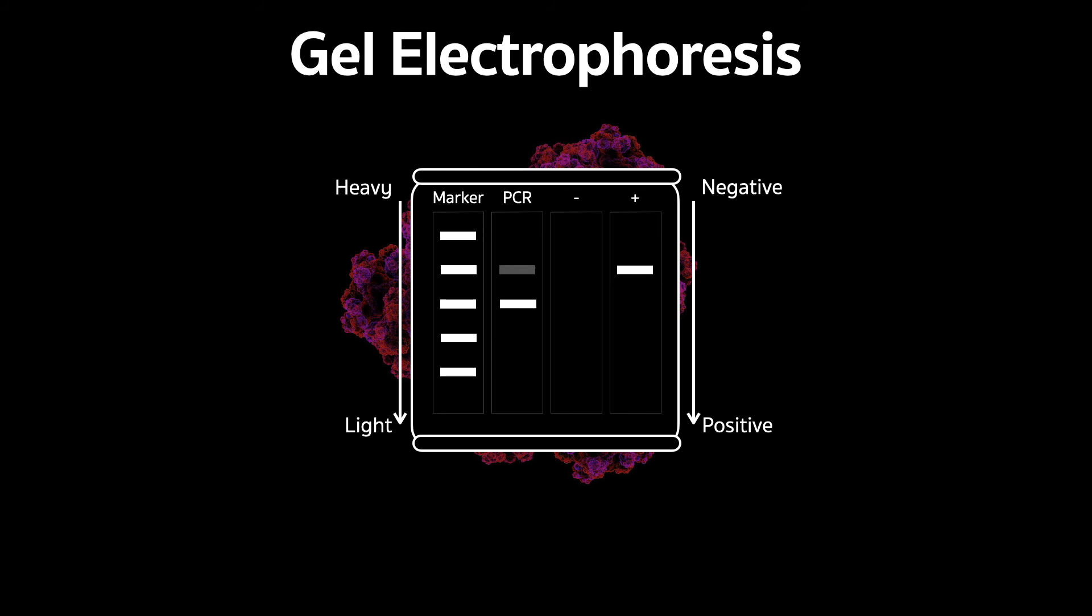This method, gel electrophoresis, is actually a very good technique for classifying DNA. Because, usually, DNA comes in different lengths. We don't really need to sequence every single DNA in order to classify them.